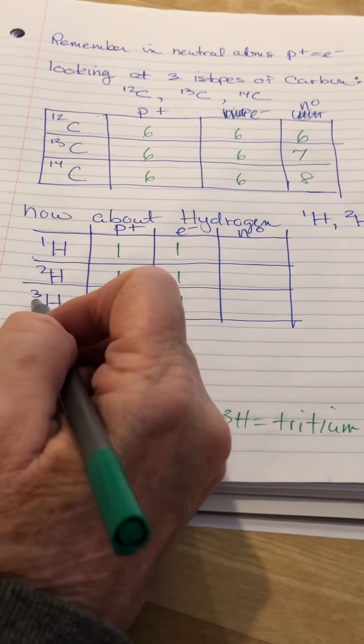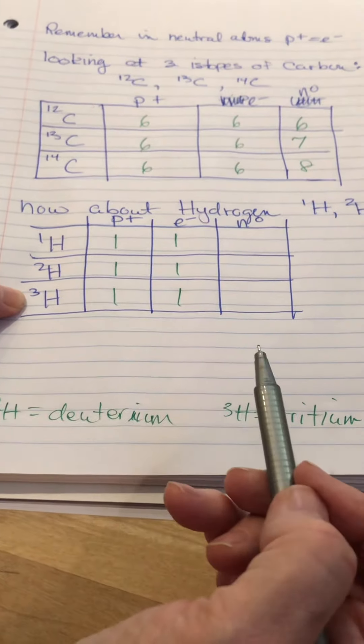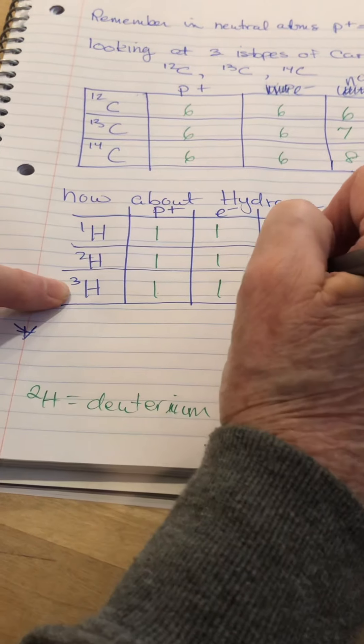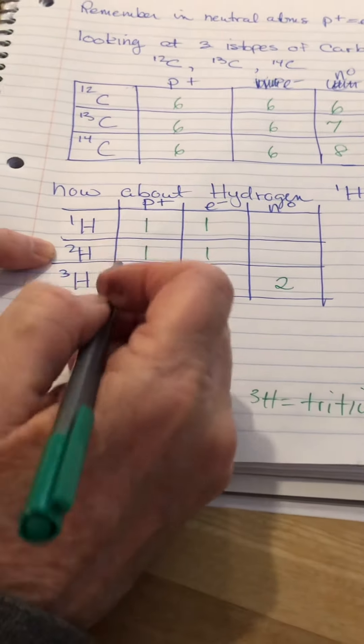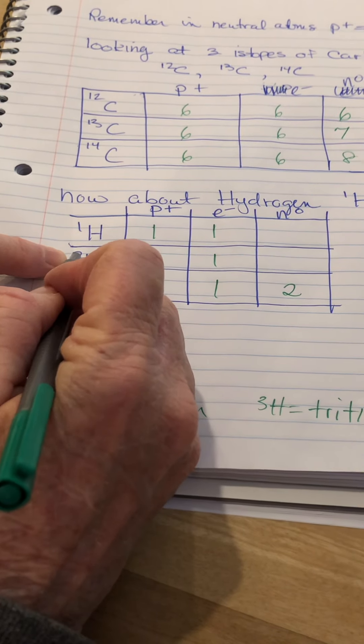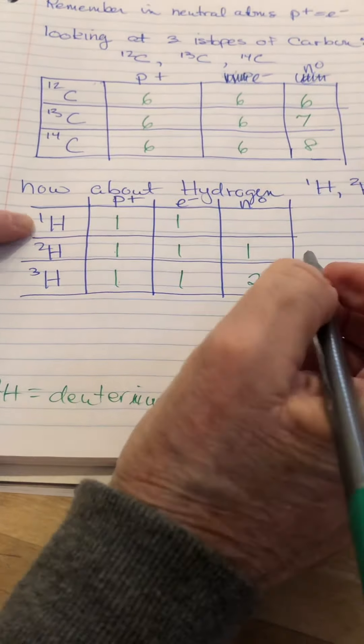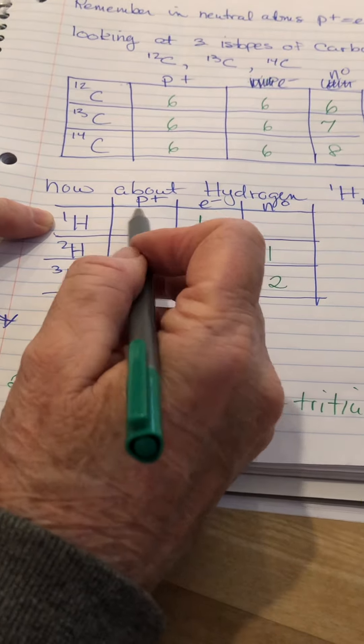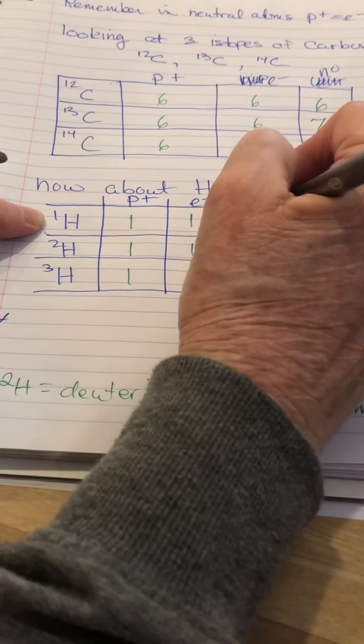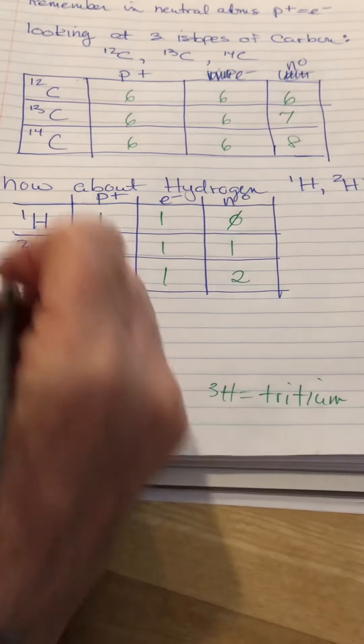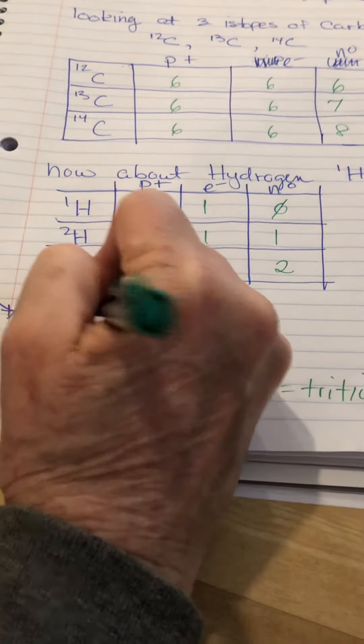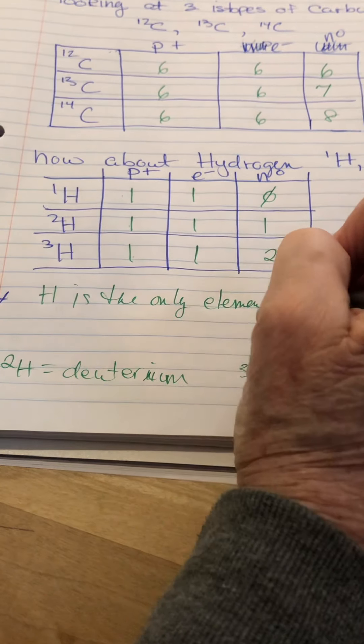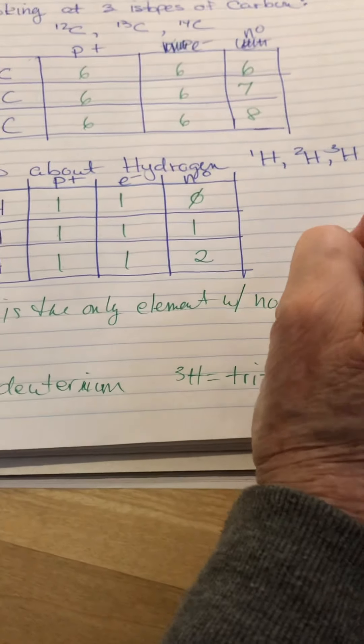Now, the number of neutrons. Let's go backwards. Tritium, or hydrogen-3, its number of neutrons, mass number minus the protons. That gives me two neutrons. Deuterium, or hydrogen-2, the neutrons are 2 minus 1, or 1. And regular old hydrogen, most of our hydrogen, the number of neutrons is the mass number minus the protons, and that gives you zero. So, hydrogen is the only element with no neutrons. How about that? That's kind of exciting.